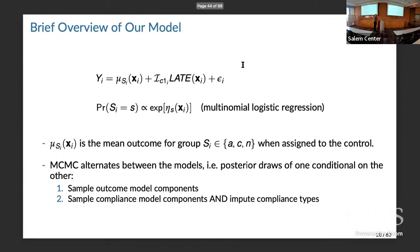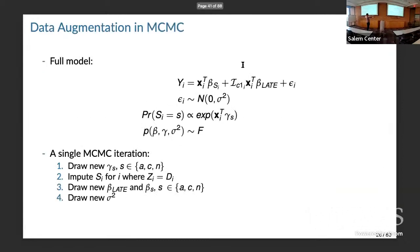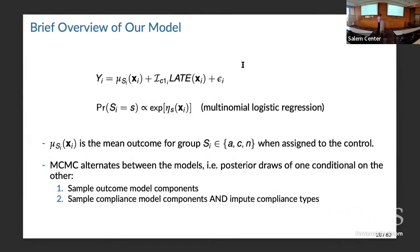Here's the big picture of our model. We have Y equal to some function determined by your compliance type stratum membership, plus an indicator of being a treated complier times a parameter function of the treatment effects — which is effectively the conditional LATE — plus a multinomial logistic regression that has non-linear pieces. S indicates whether you're an always-taker, complier, or never-taker.